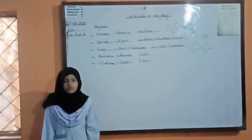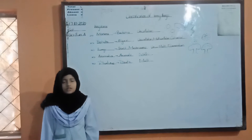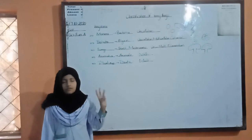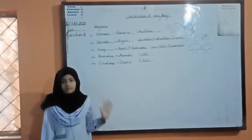Classification of living things means grouping of living things. Living things are classified into five kingdoms. These are Monera, Protista, Fungi, Animalia, and Plantae.